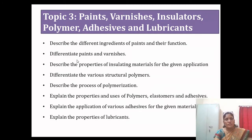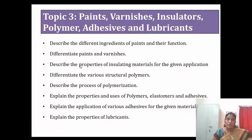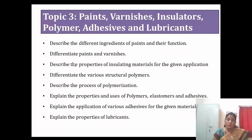Topic 3 covers various non-metallic materials useful for engineering work, including paints, varnishes, insulators, polymers, adhesives, and lubricants. After completing this topic, learners will describe the different ingredients of paint and their functions, how the properties of paint can be improved, and which ingredients should be added to improve their functions. Similarly for varnishes, and learners can differentiate between paints and varnishes.